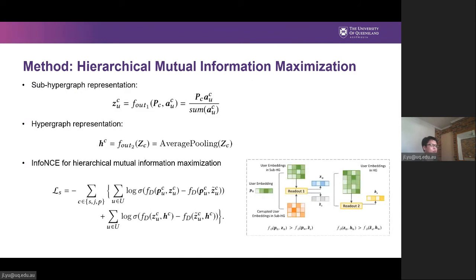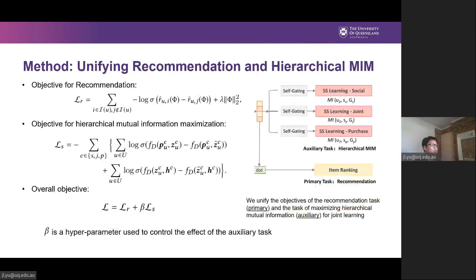With this intuition, we define two readout functions which are permutation invariant to get the sub-hypergraph representation and the hypergraph representation. We then follow Deep Graph InfoMax and use InfoNCE as our learning objective to maximize the hierarchical mutual information. We consider that the user should have a stronger correlation with the sub-hypergraph centered on her, so we directly maximize the mutual information between their representations. By contrast, the user would not relate to all other users too closely, so we indirectly maximize the mutual information between the representations of the user and the complete hypergraph by regarding the sub-hypergraph as the mediator. Finally, we unify recommendation and hierarchical mutual information maximization under a joint learning framework. We use BPR loss to optimize the recommendation task and incorporate the self-supervised task with a hyperparameter beta that can control the effect of self-supervised learning.